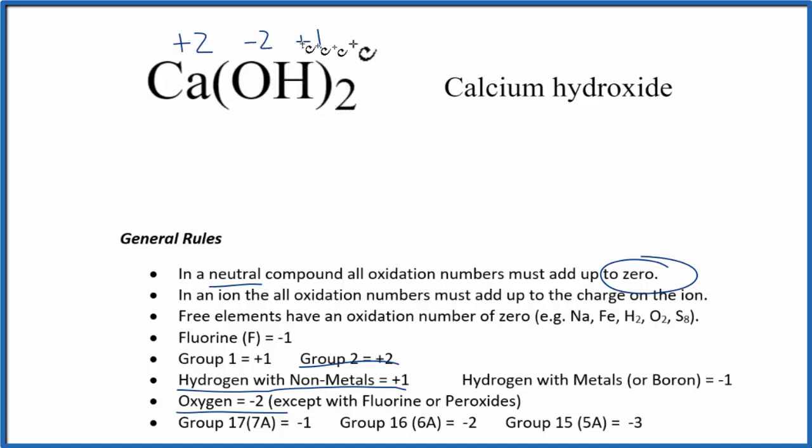We can check this - all of these should add up to zero because this is a neutral compound. Let's try it. +2 for the calcium, plus, putting my parentheses in just like the formula, oxygen's -2 plus the 1 for hydrogen, and then I have 2 of these hydroxides. Put a 2 here, that equals zero. So we have +2 plus -1 times 2, that gives us -2, that equals zero. So that makes sense.